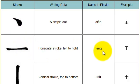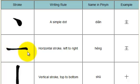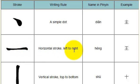The next stroke is heng. Heng means horizontal. These horizontal strokes are drawn from the left to the right. Put your pen down and draw across from left to right. You can see in this character that the heng stroke is used three times: one, two, and three.